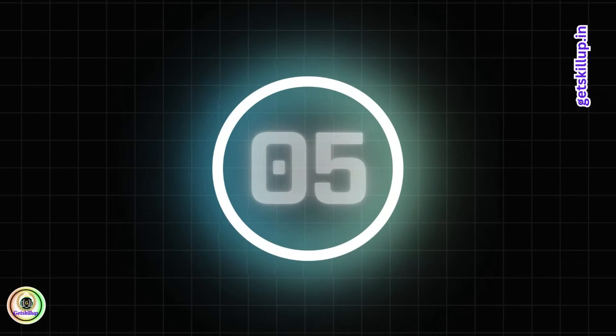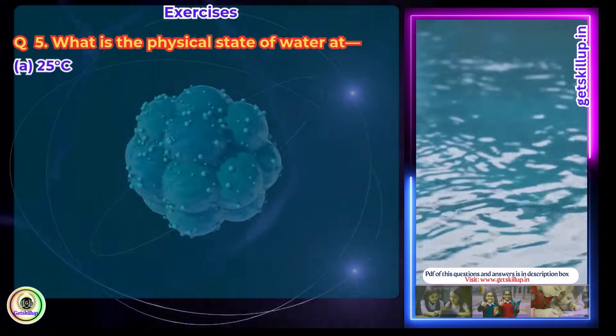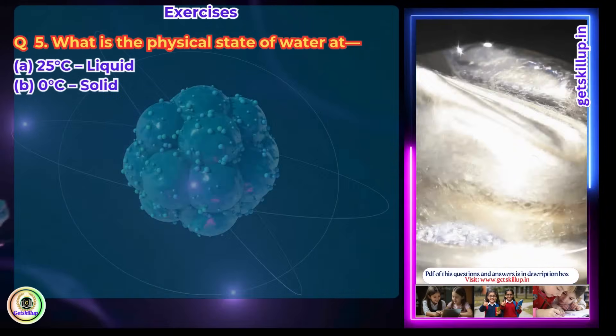Question 5: What is the physical state of water at 25 degrees Celsius? Answer: At 25 degrees Celsius, the physical state of water is liquid.